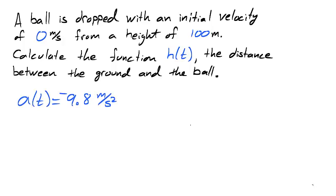We assume that the only force acting on the ball is gravity, which accelerates the ball at negative 9.8 meters per second squared. Since the derivative of velocity is acceleration, the antiderivative of acceleration is velocity.